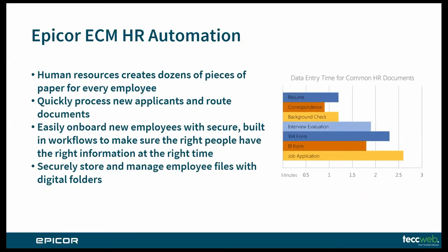ECM HR automation addresses that human resources potentially creates dozens of pieces of paper for every employee — from applications, background checks, insurance, employment and benefits forms to post-separation forms. Using HR automation, you can quickly process new applicants and route documents to the appropriate managers with electronic forms, ensuring the best applicants get the attention they deserve. You can easily onboard new employees with secure built-in workflows to ensure the right people have the right information at the right time, identify anything that's missing, and securely store and manage employee files with digital folders that ensure separation of key HR documents like I-9s, medical records, and other employee documents.